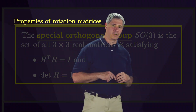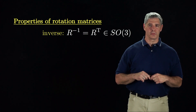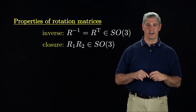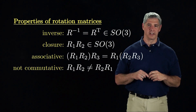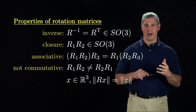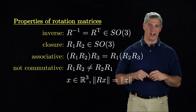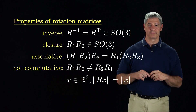Rotation matrices satisfy the following properties. The inverse of R equals its transpose, which is also a rotation matrix. The matrix product of two rotation matrices is also a rotation matrix. Matrix multiplication is associative, but in general it is not commutative. Finally, for any 3-vector x, R times x has the same length as x — meaning that rotating a vector does not change its length. In the next video, we'll study three common uses of rotation matrices.